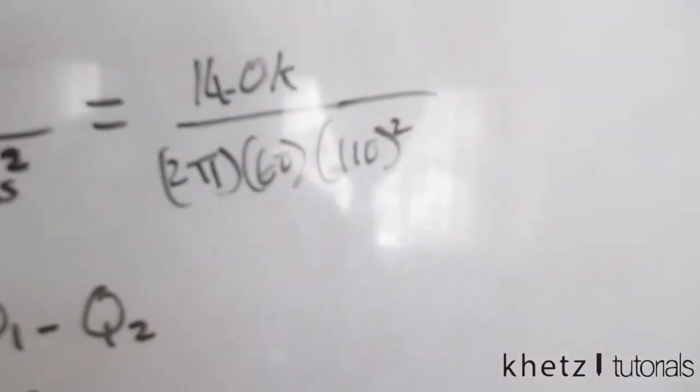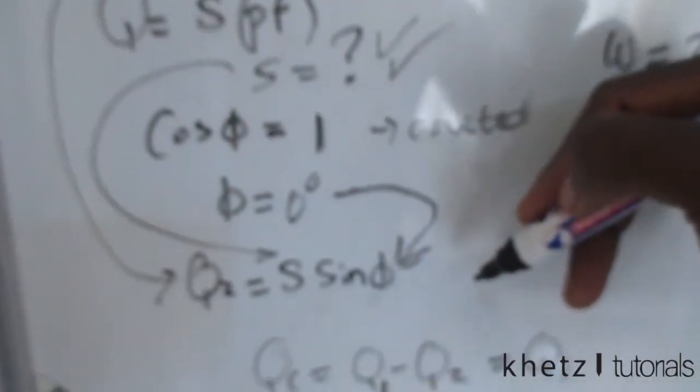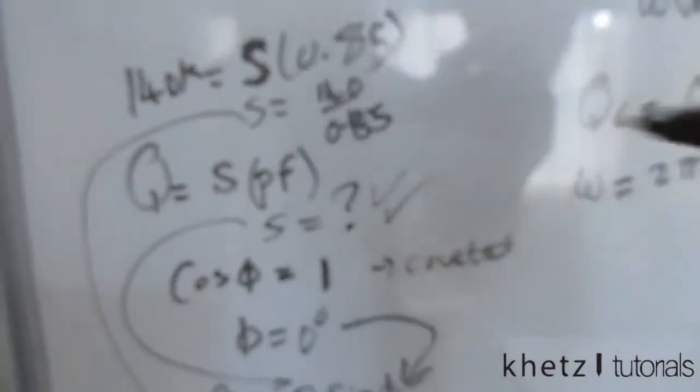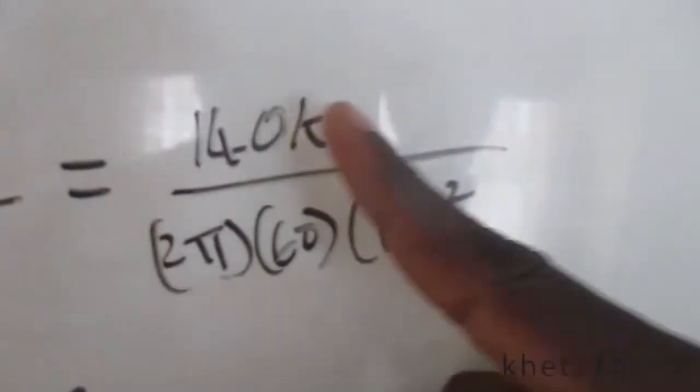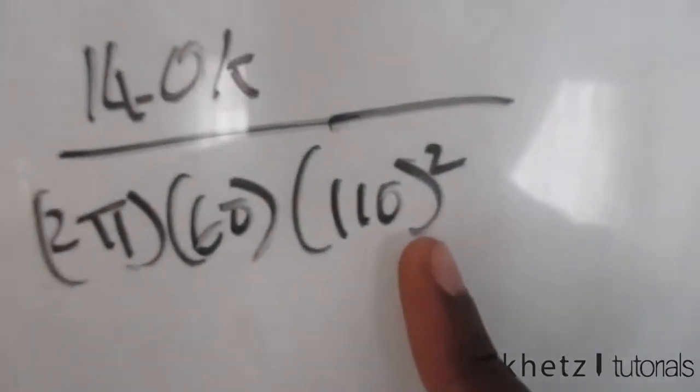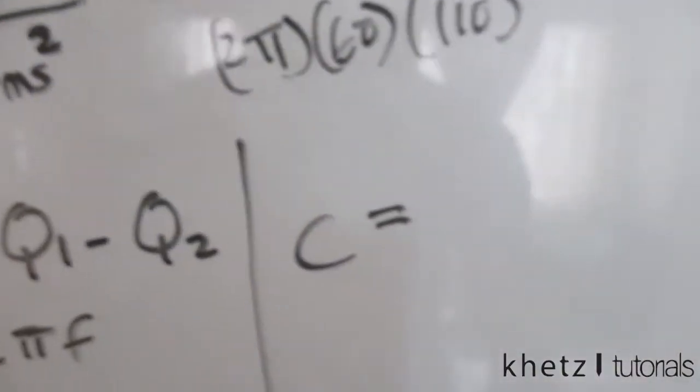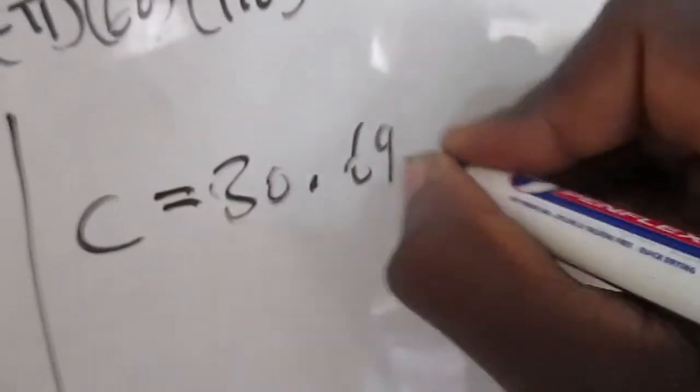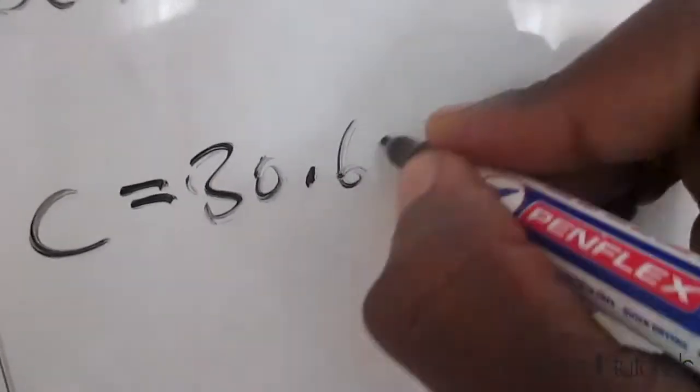So basically done, I'm basically done with the question. You just follow these steps for any other power factor which you want to find. But for a unity power factor you just have to quickly do this and notice that you only have your Q1. Therefore, substituting your 140k divided by 2π multiplied by 60 multiplied by 110 squared should give you a capacitor value of 30.69 millifarad.